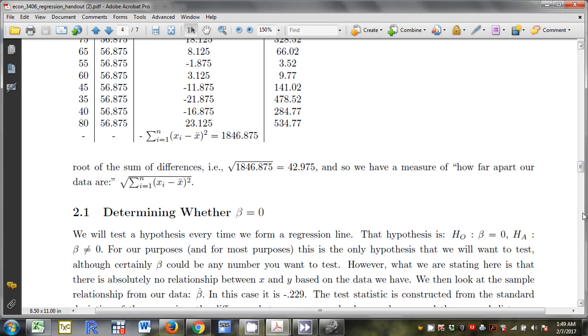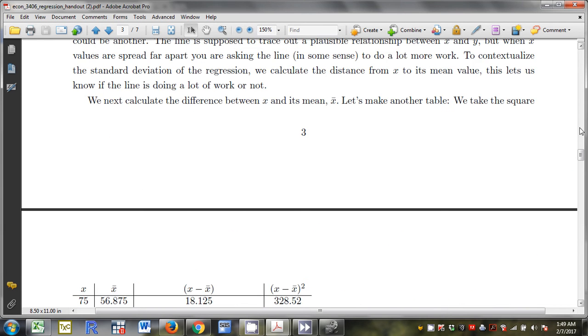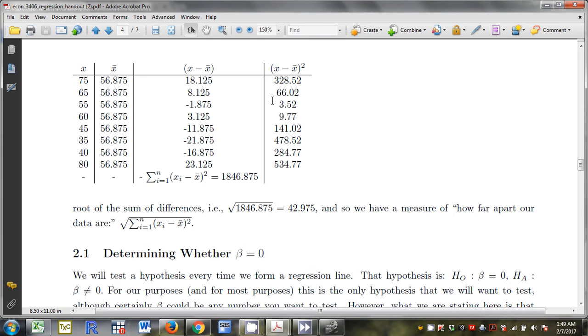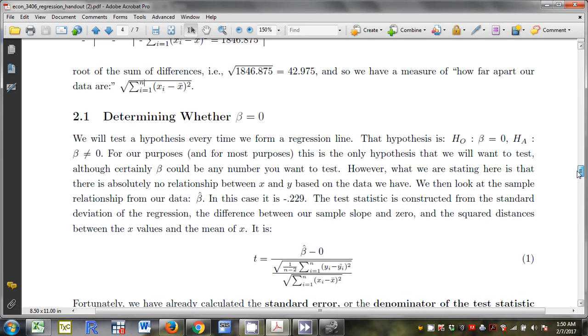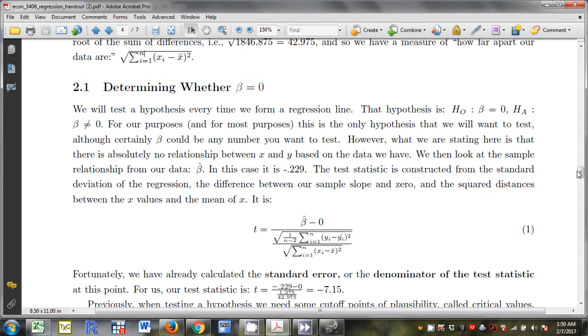So in this instance, what we're going to do is next calculate the difference between x and its mean. And this is going to tell us whether the graph is stretched far apart or it's not. Here are the values for x. Here's the mean of x. I subtract the 2. I square them all. That's the distance from x to its mean. And we're going to take a look at the square root of this number. That's going to go into our test statistic. So when we determine whether or not there's a slope, our null is always going to be that there's no relationship or alternative is that there might be. This is the only hypothesis we're going to want to test for this class. Although certainly beta could be any number you want to test. So I'm not restricted to a slope of 0, but for this class, I'll just use 0.